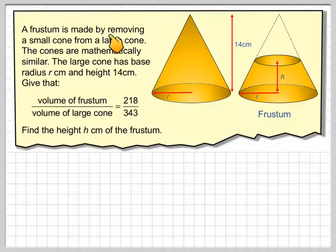A frustum is made by removing a small cone from a large cone. So here we have a cone. If we take out that small cone, the shape that we get left here is called a frustum.